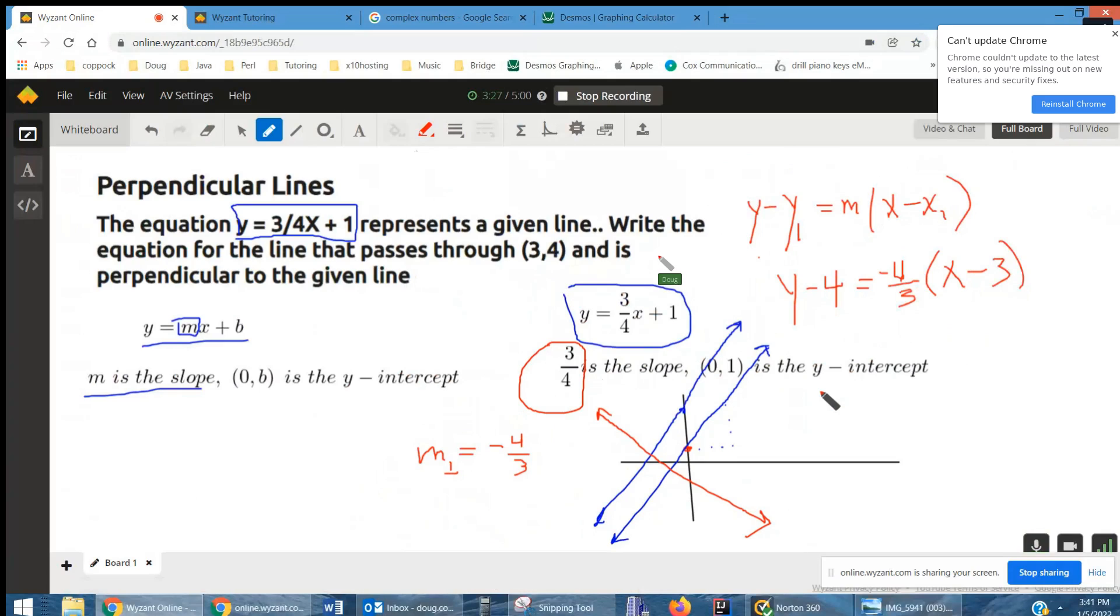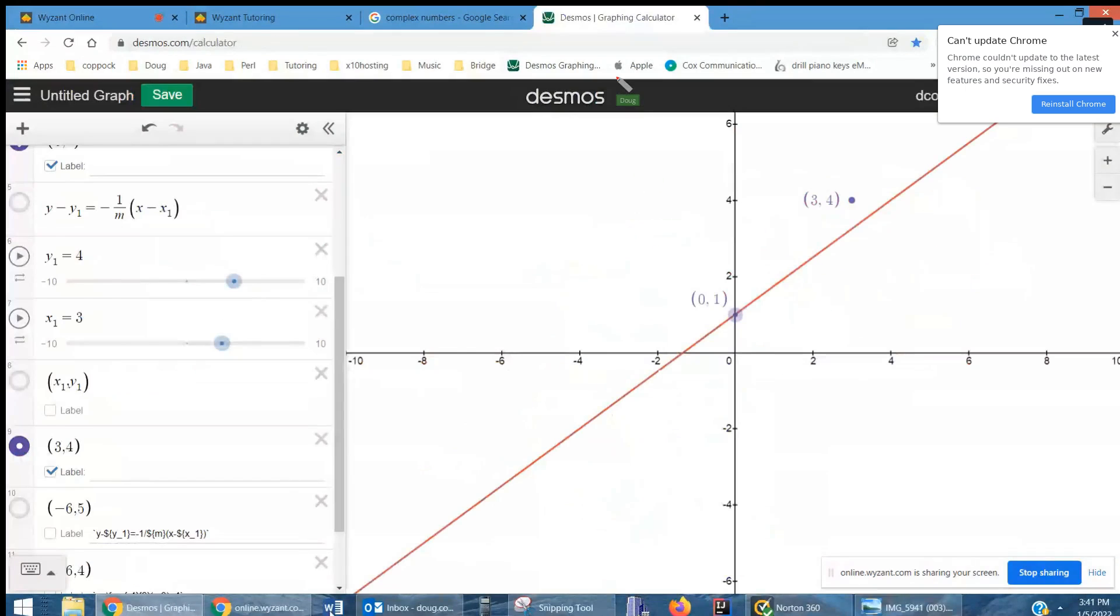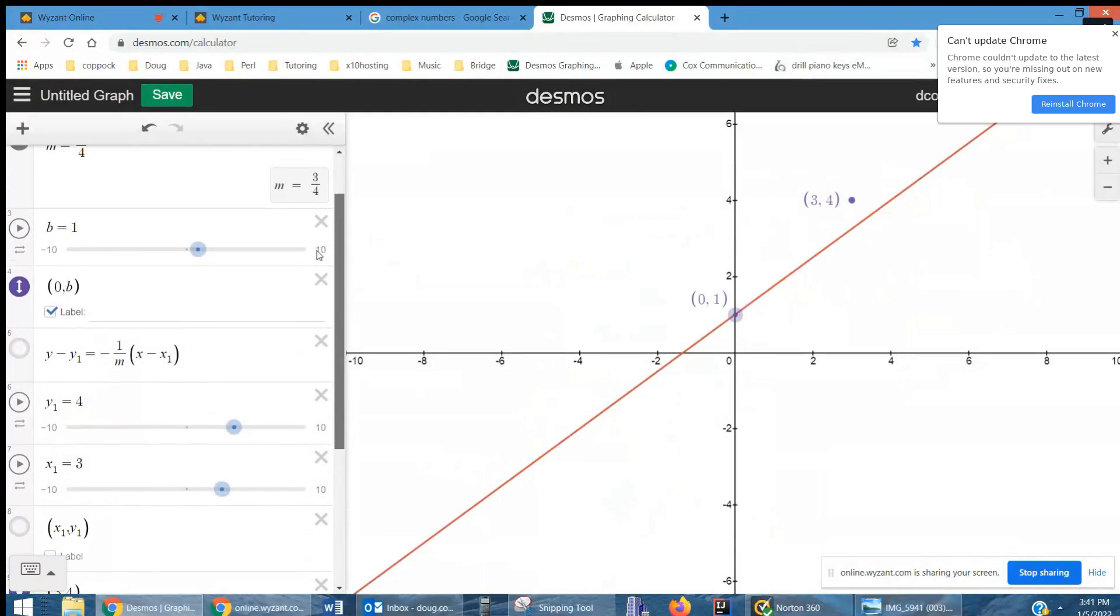Now you could simplify that or change it into slope-intercept form. Let's go back to Desmos and see what's happening. Here is the negative reciprocal, negative one over m. And I've set x sub 1, y sub 1 to 3, 4.